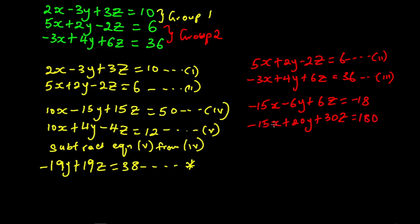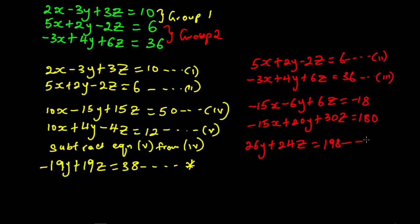To eliminate x we subtract the first result from the second. Minus 15x minus minus 15x gives 0, so x is eliminated. 20y minus minus 6y gives 26y. 30z minus 6z gives 24z. And 180 minus minus 18 gives 198. So we have 26y plus 24z equal to 198. We call this equation star star.